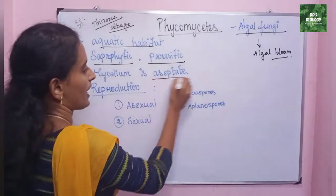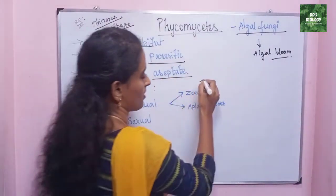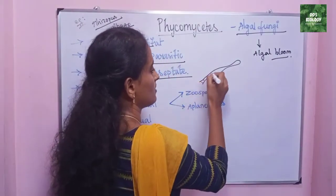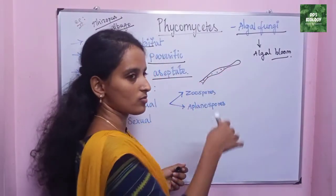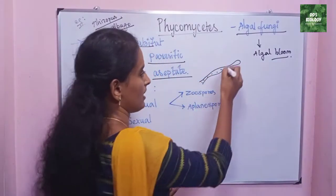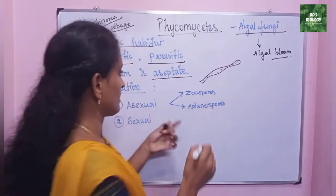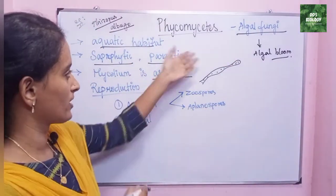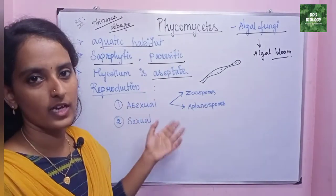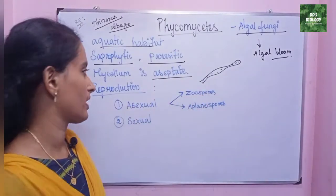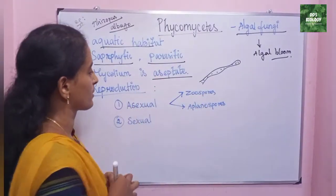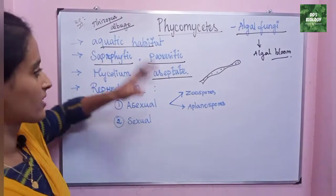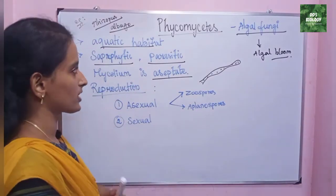The mycelium is aseptate. The hypha does not have cross walls — it is not multi-nucleate, it is aseptate mycelium. So Phycomycetes come under mycelium as aseptate. So this is the general Phycomycetes character.